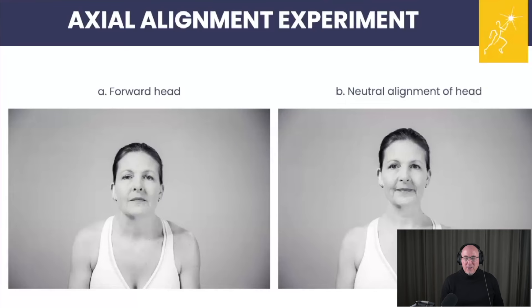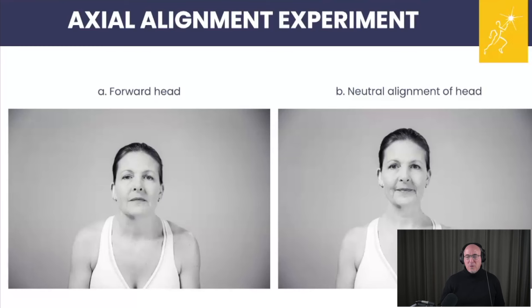If she compensates by going into flexion or extension, she'll lose some of that axial rotation. There was a great study that came out not too long ago where they were interviewing people and changing their postures, and there was a direct correlation: negativity in answers came from those with a slouched posture, compared to positivity from those who stood up tall. It's very interesting that we could literally change the perception of the world merely by changing that axial alignment.